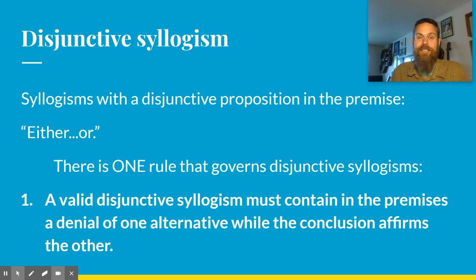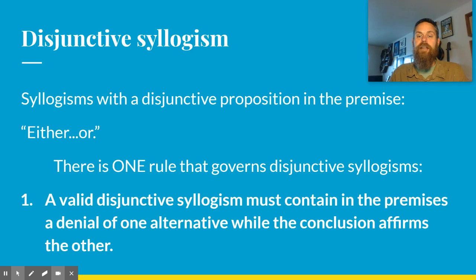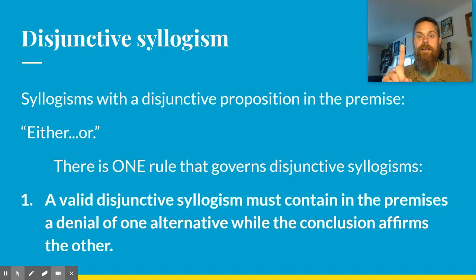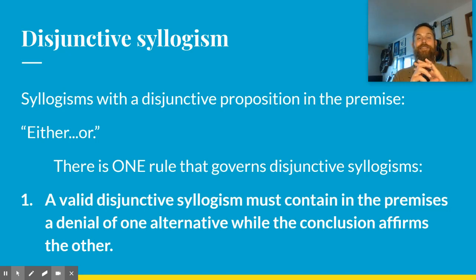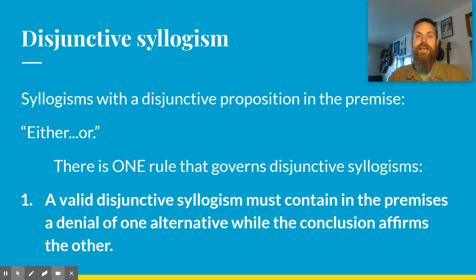There's one rule that governs disjunctive syllogisms: a disjunctive syllogism must contain in the premises a denial of one alternative, while the conclusion affirms the other. So if you say either A or B, your second premise must be a denial of one in order to conclude the affirmative of the other. For example: either A or B; not B; therefore A. If it doesn't look that way, it's invalid — it's a formal fallacy.